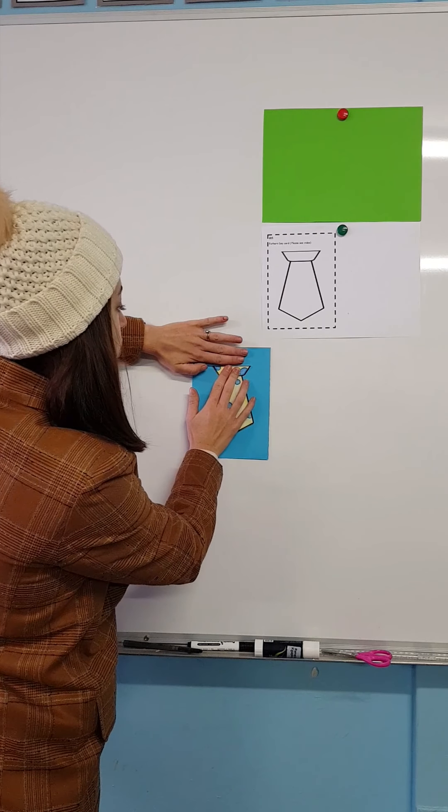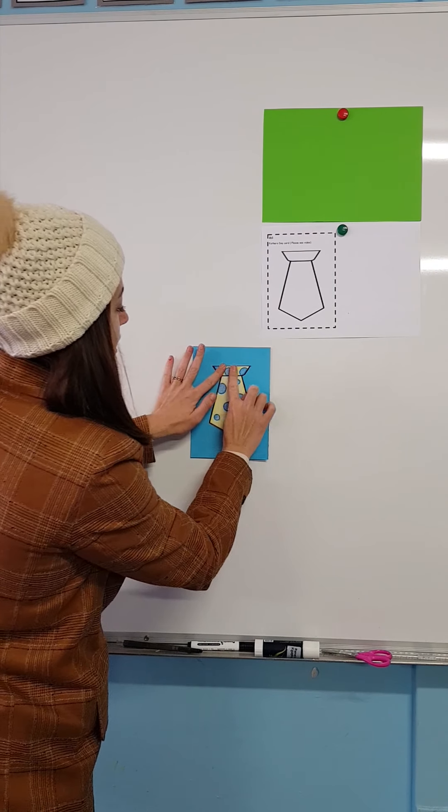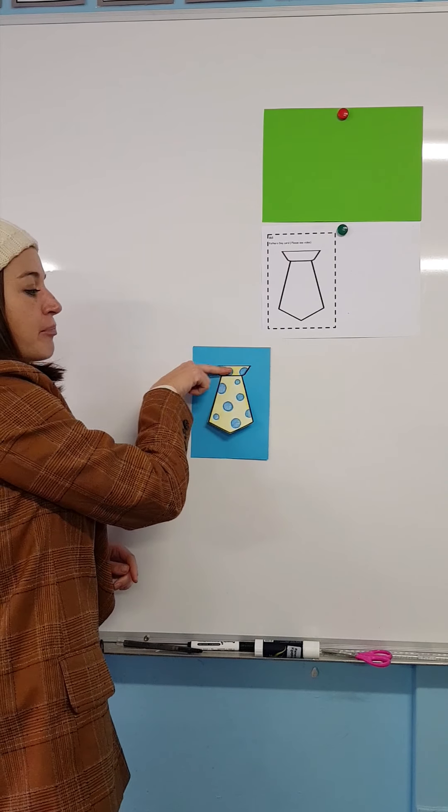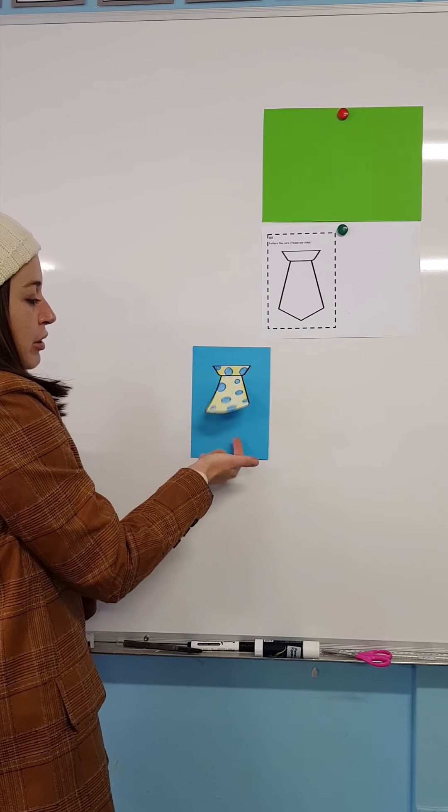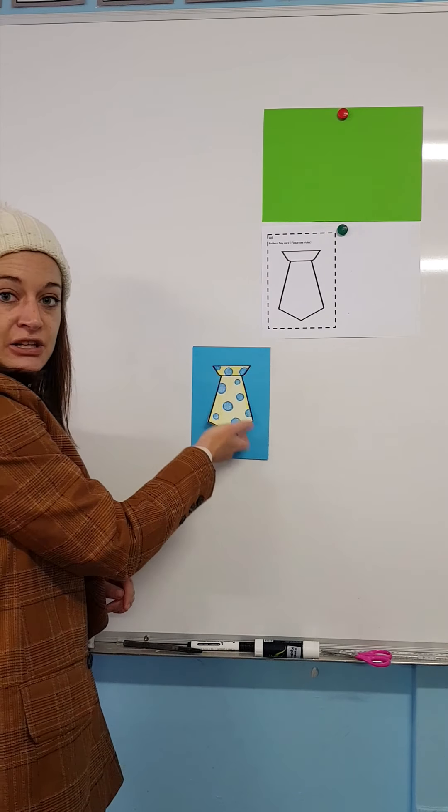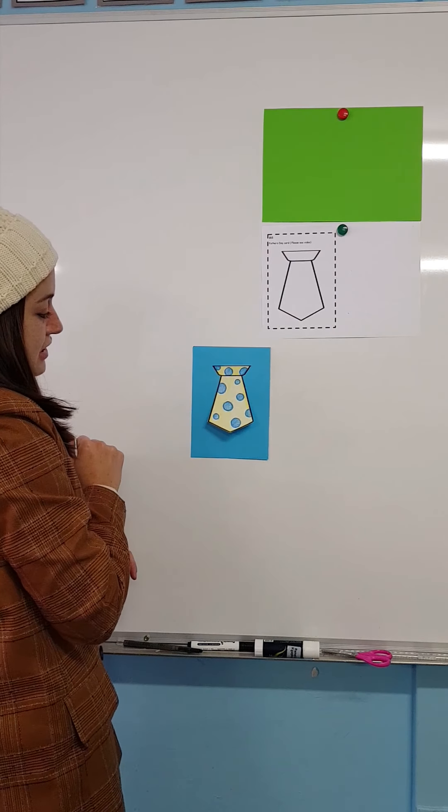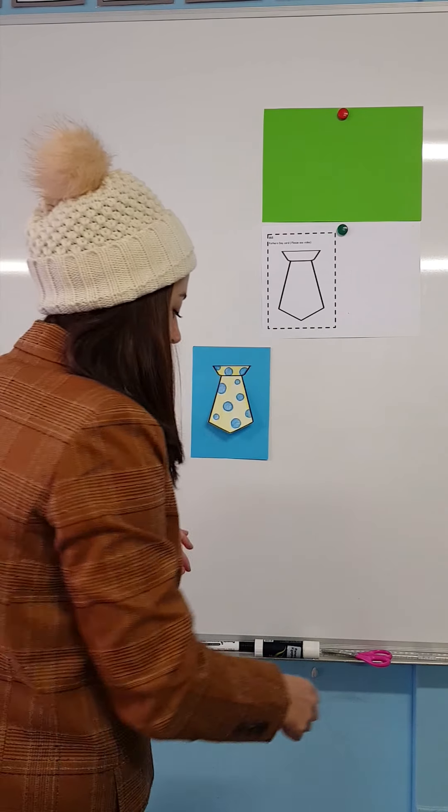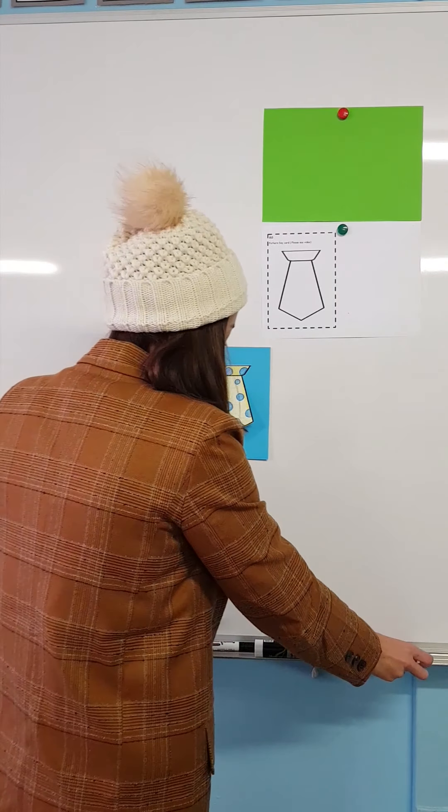And then in the middle of my paper, two fingers from the top, I'm going to stick my tie. It's only the top part that's glued, the bottom part is still loose and flaps. Now you can ask your mommy to help you with this part if you struggle.